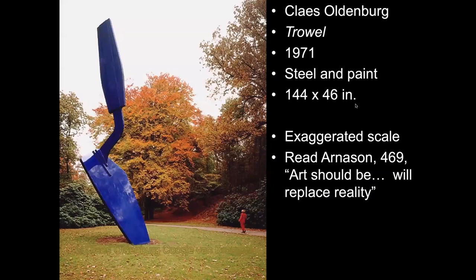Claes Oldenburg did a different type of pop art, more like what Lichtenstein was doing — trying to make things as large as possible. He uses an exaggerated scale of something anyone might use, like a gardening trowel you'd buy at a regular store. Nothing special — but he wanted to make it special. Oldenburg said: 'Art should be literally made of the ordinary world. Its space should be our space, its time our time, its objects are ordinary objects. The reality of art will replace reality.'